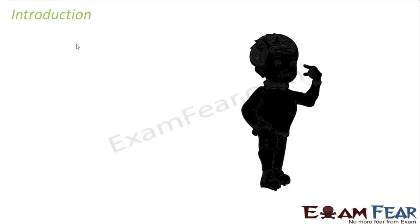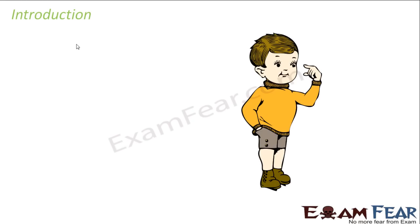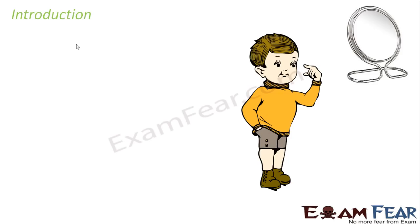Let us look at this introduction screen. As always, the introduction page consists of things we see around us that are related to what we are going to study. What do you see here? Something dark — it looks like somebody is standing there. But when the light is switched on in the room, you can see there is a boy standing inside the room. So light is something which enables you to view objects. You are seeing so many beautiful things around you because of reflection of light.